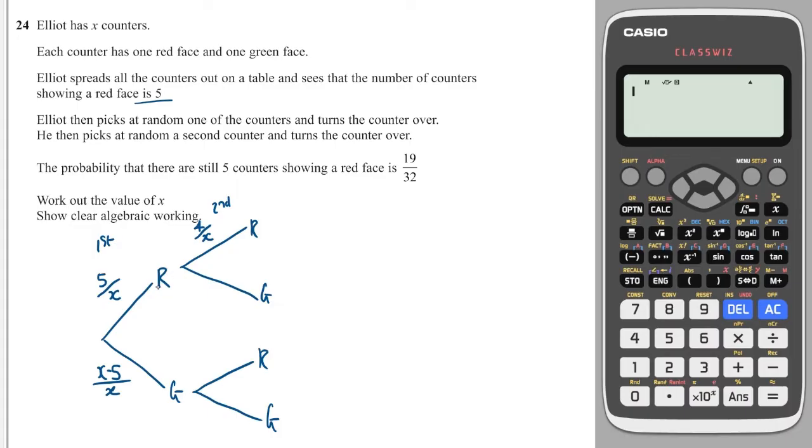If I've picked a red, then I've flipped it over, which has turned it green, which means there's now an extra green to pick from. So before there were X minus 5, I need to add 1 to that, so it's X minus 4, and again, over X.